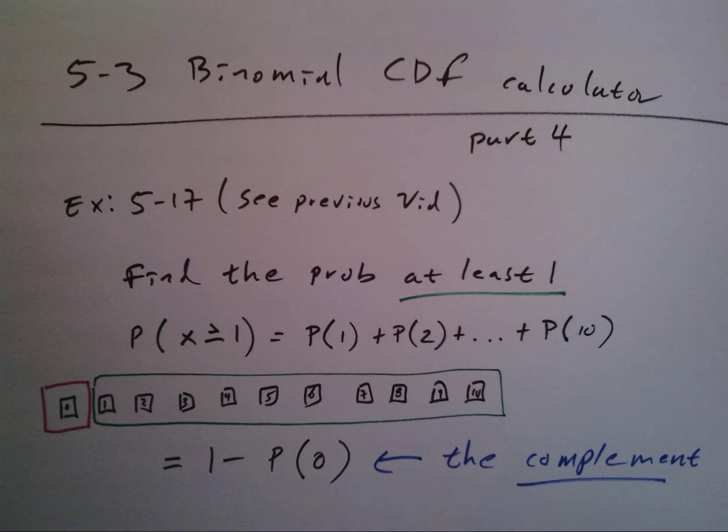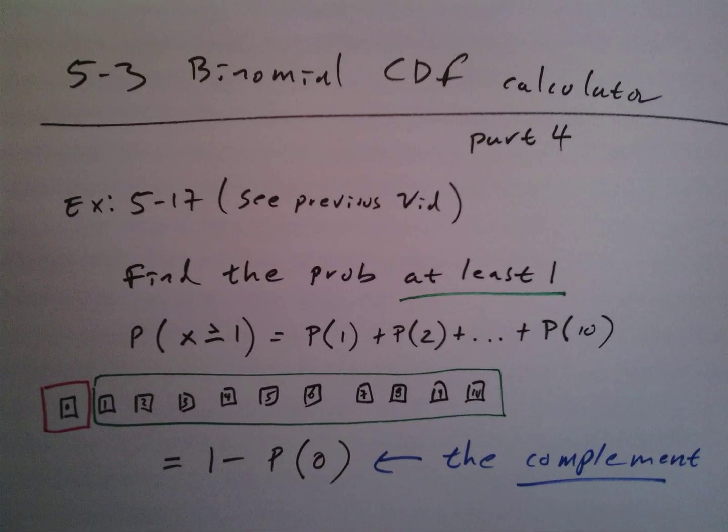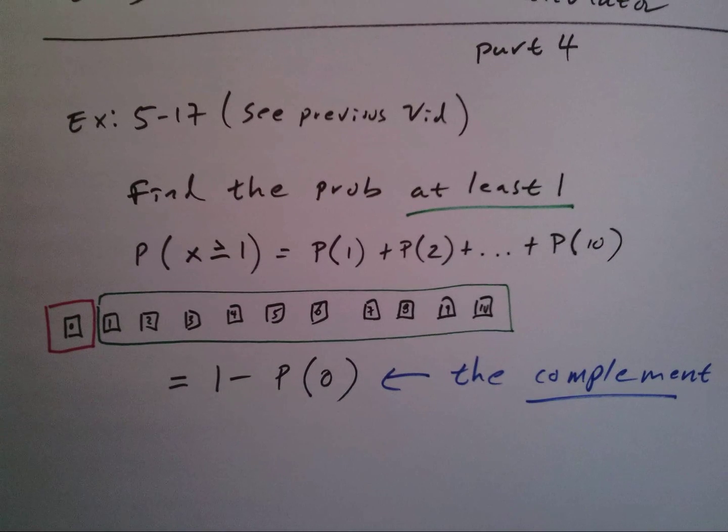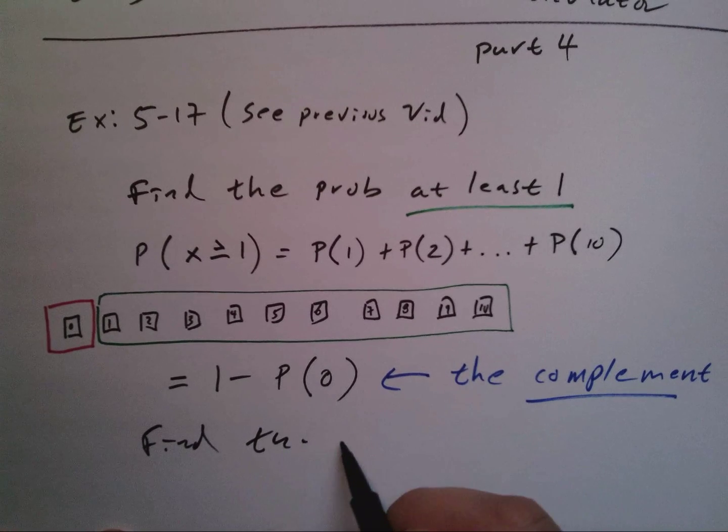What's the one thing I don't want? I don't want zero. So if I don't want zero, then I could just do one minus the probability of zero, and that gives me everything else. Again, this is the complement. At least leads us to the complement.